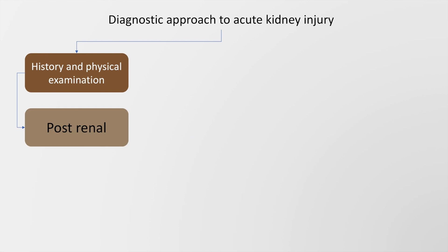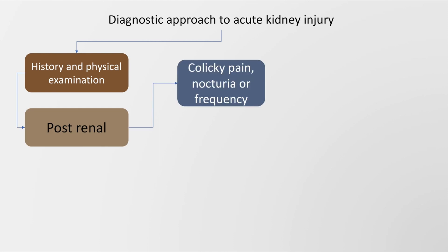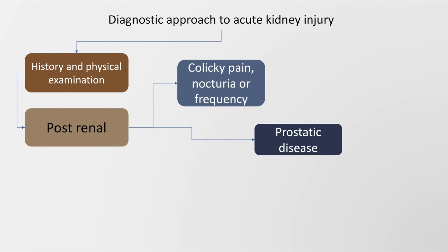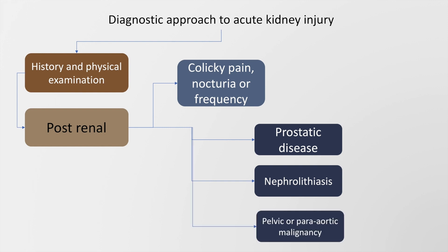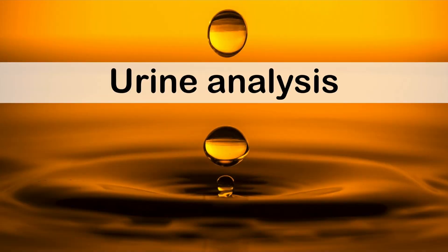History and physical examination in post-renal AKI may include history of colicky pain, nocturia, or frequency. Examination might reveal prostatic disease, nephrolithiasis, and pelvic or para-aortic malignancy.